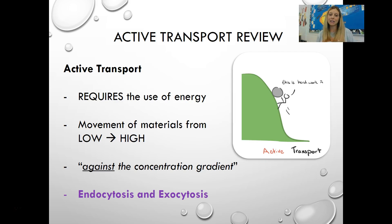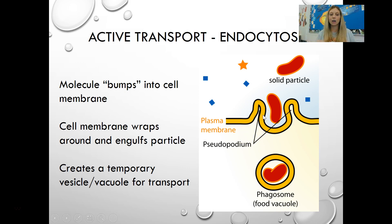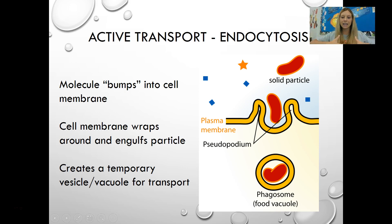Now we move on to active transport. Active transport requires energy because you're making molecules do what they don't want to do — move from low to high, against the concentration gradient. Our two types are endocytosis and exocytosis. In endocytosis, you need to move large molecules into the cell, most commonly food. The cell membrane wraps around and engulfs the particle — because the cell membrane is very flexible — and pinches off into a temporary vesicle or vacuole to go to where it needs to go in the cell for digestion.